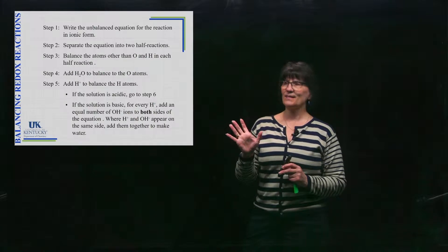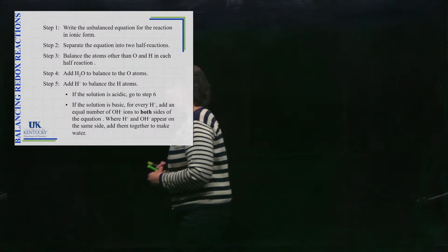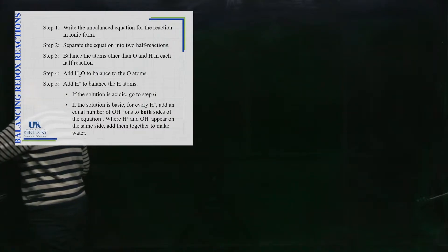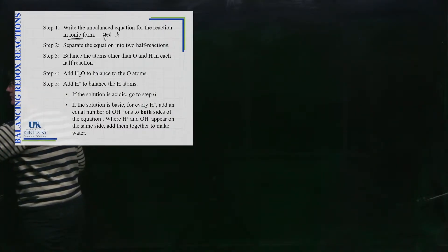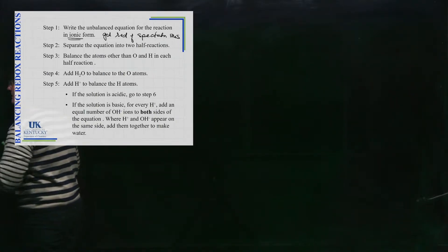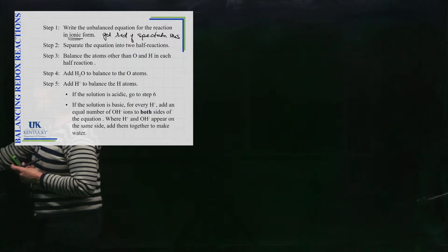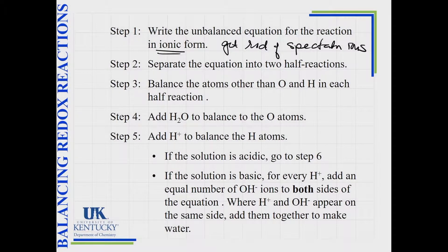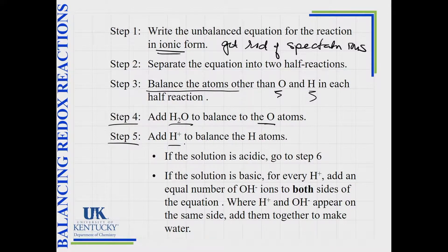There are lots of steps. Step one: write the unbalanced reaction in ionic form — in other words, get rid of spectator ions. Then separate the equation into two half-reactions. Next, balance the atoms other than oxygen and hydrogen in the normal way. When you balance the oxygens, you add water molecules. When you balance the hydrogens, you add H⁺. That's what you do in acidic solution.